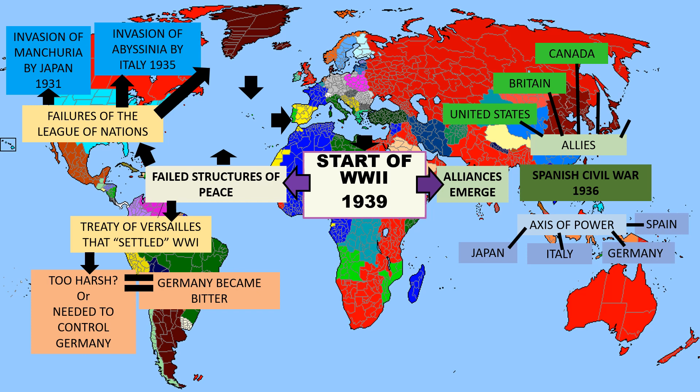The McKenzie-Papineau Battalion going to fight in the Spanish Civil War is one of the contributions Canada makes at the start of World War II. They lost to Franco, the dictator who did eventually overthrow the socialist government with the help of Germany, Italy, and Japan. The Canadian soldiers returned to Canada with the message that Canada needed to break its policy of isolationism and get involved in what was going on around the world to prevent World War II.